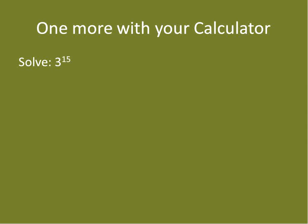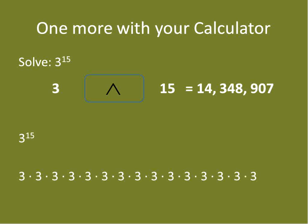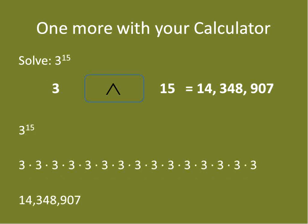Let's practice using the calculator with another example: 3 to the power of 15. Put in 3, press your exponent button, press 15, then hit equals. Did you get 14,348,907? That's the answer — confirmed on both a Casio and a Texas Instruments calculator. It means 3 times itself 15 times. If you want to check your work by multiplying 3 times 3 times 3 repeatedly up to 15, you should get the same answer.